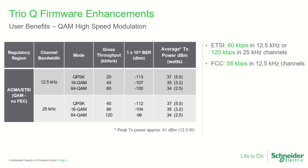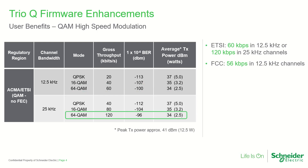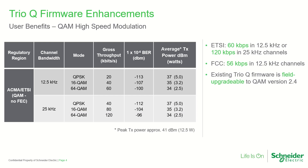Here is a quick summary of enhancements made to the TRIO-Q firmware, providing powerful new benefits. In the European and Australian version of the radio, up to 60 kilobits per second is achievable in a 12.5 kilohertz channel, or up to 120 kilobits in a 25 kilohertz channel. In the American FCC version, up to 56 kilobits is achievable in a 12.5 kilohertz channel. Note that the firmware of existing TRIO-Q radios may be upgraded in the field to version 2.4 or newer to enable QAM.